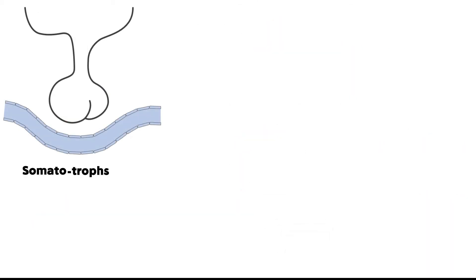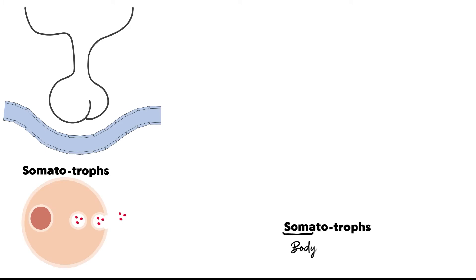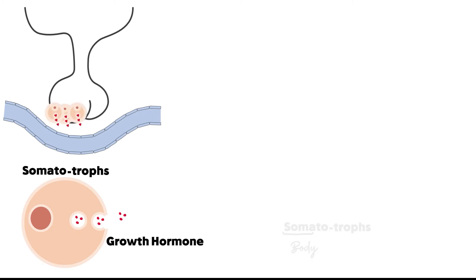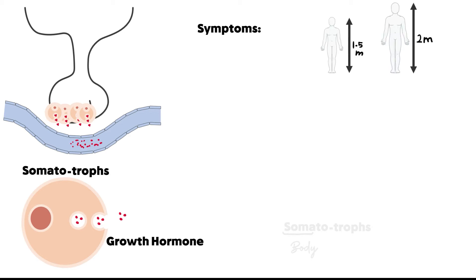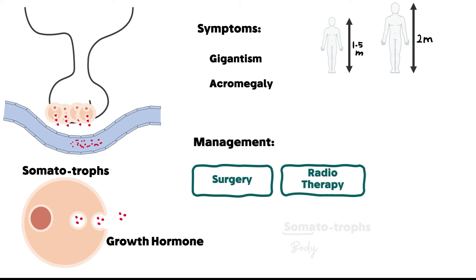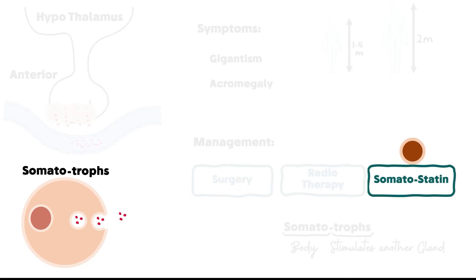The second type of secreting pituitary adenoma is initiated in somatotrophs. 'Somato' or 'soma' stands for body. This type secretes growth hormone that controls body size or body height. If the number of these cells increases, this causes increased growth hormone secretion, with symptoms of gigantism in children or acromegaly in adults.